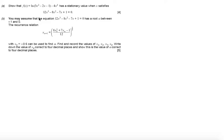That's f of x equals log of 3x squared minus 2x minus 1 minus 4x squared has a stationary value when x satisfies the cubic equation given.